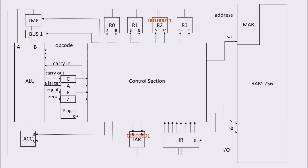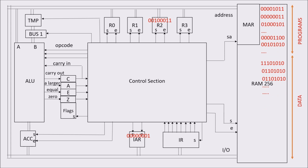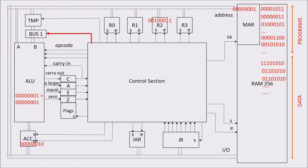We remember that the memory is partly dedicated to the program and partly to the data. First, we put on the bus the instruction address register content and from there to the memory address register, so now we have the RAM address of our instruction selected. Simultaneously, being the instruction address on the bus, we activate bus 1, and being the opcode 000 by default, we perform an add operation incrementing by 1 the address of the instruction and putting the result in the accumulator register.